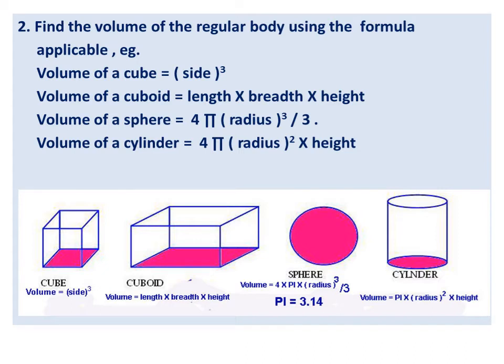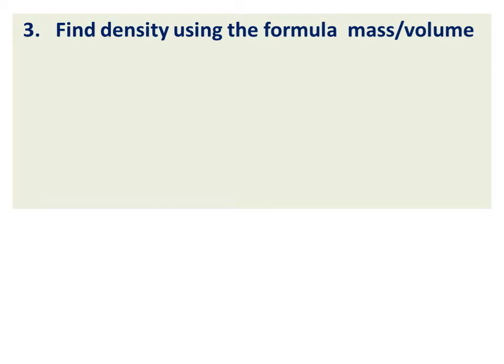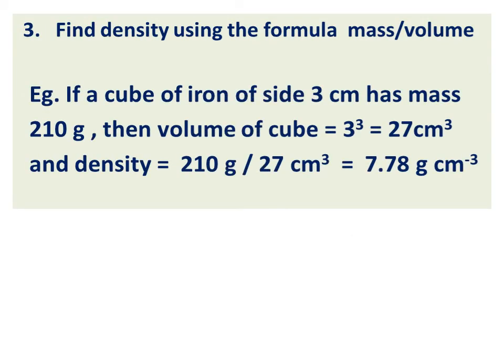Volume of a cylinder is equal to pi radius squared multiplied by height. Step 3: Find density using the formula mass divided by volume. For example, if a cube of iron of side 3 centimeter has mass 210 gram, then volume of cube is equal to 3 cubed, equal to 27 centimeter cube, and density is equal to 210 gram divided by 27 centimeter cube, equal to 7.78 grams per centimeter cube.